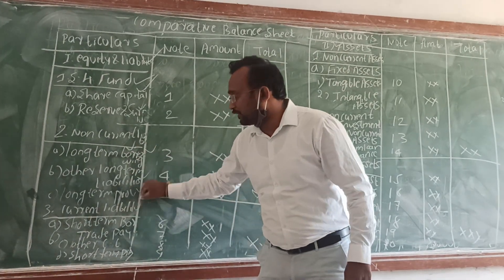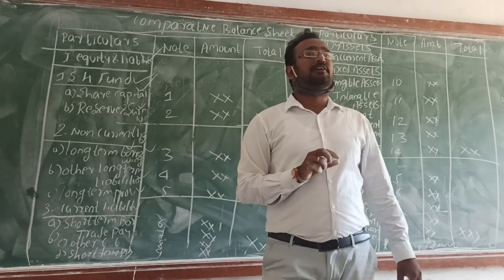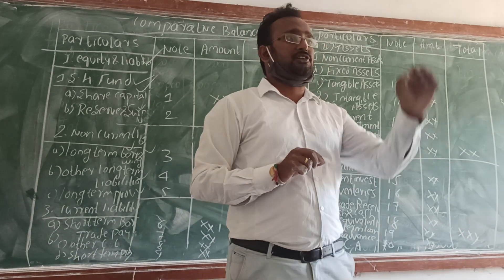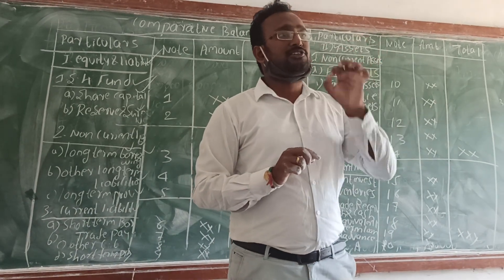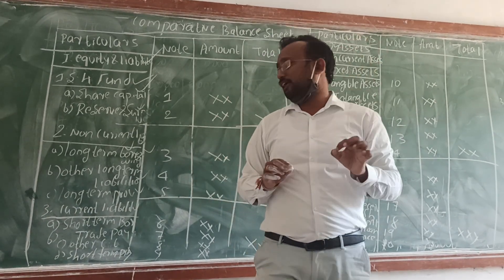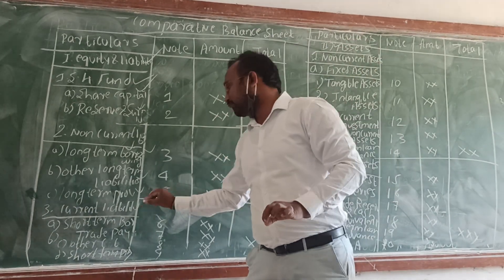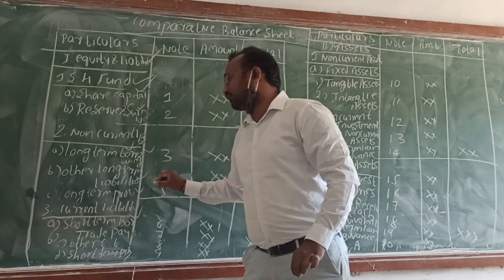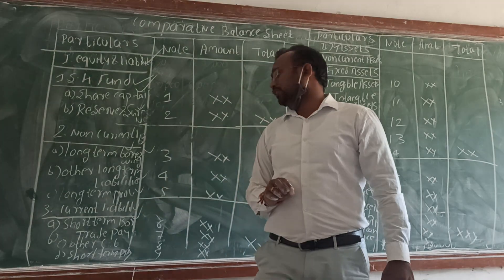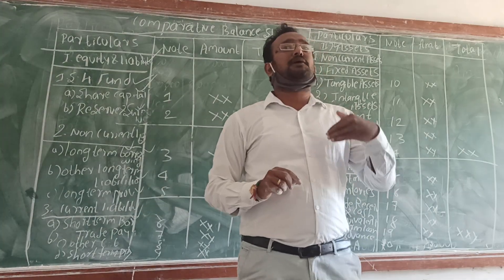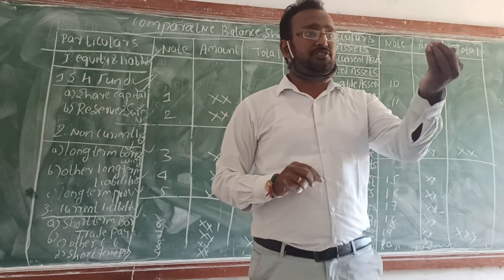Part three is called current liabilities. In that, the first one is short-term borrowings, which is also called short-term loans.